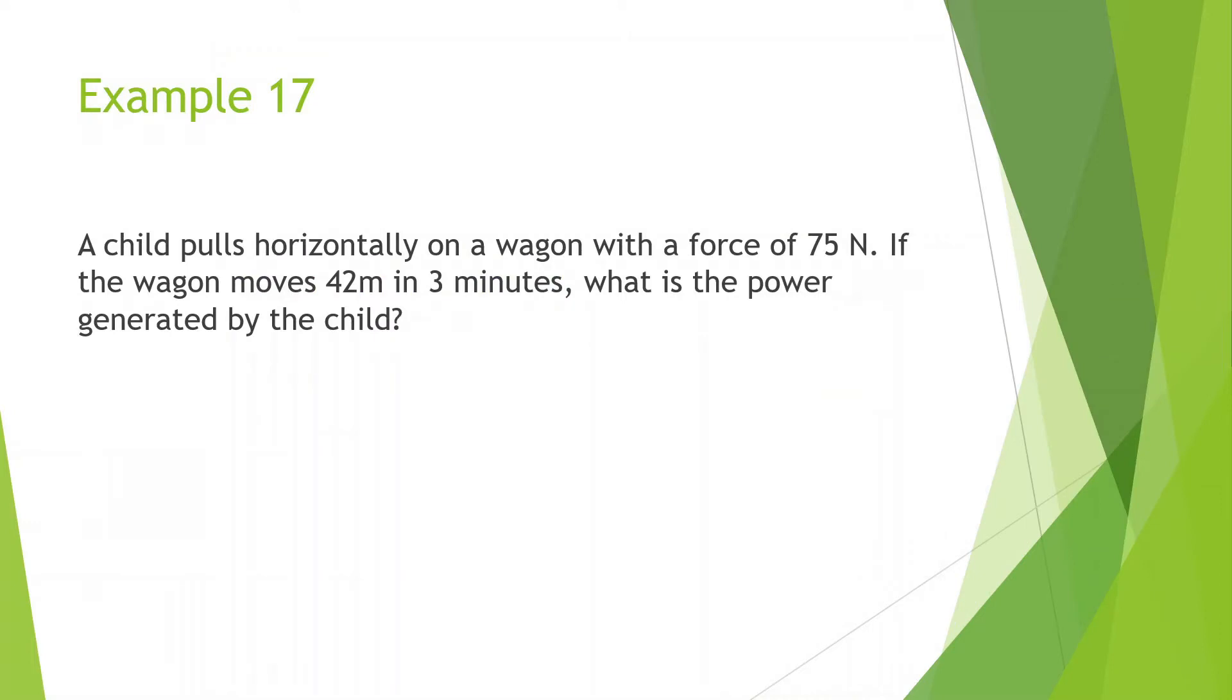A child pulls horizontally on a wagon with a force of 75 newtons. If the wagon moves 42 meters in 3 minutes, what is the power generated by the child? Okay, so what we have...